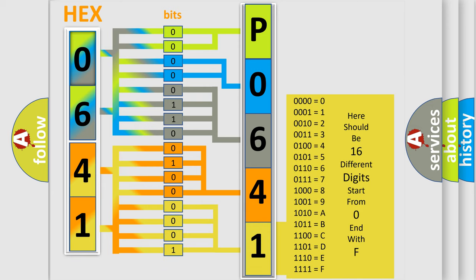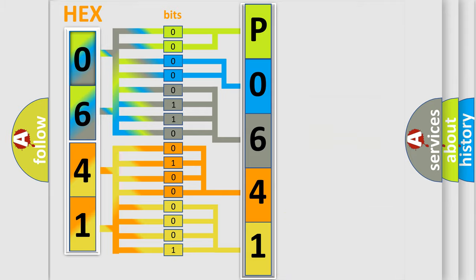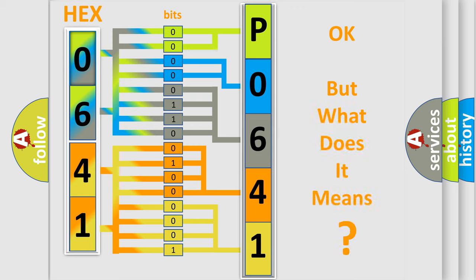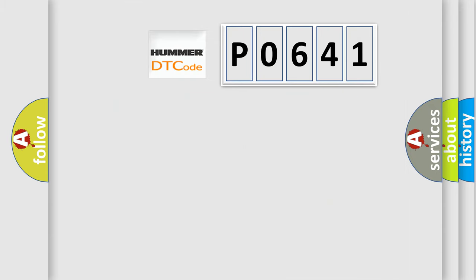We now know in what way the diagnostic tool translates the received information into a more comprehensible format. The number itself does not make sense to us if we cannot assign information about what it actually expresses. So, what does the Diagnostic Trouble Code P0641 interpret specifically for car manufacturers?